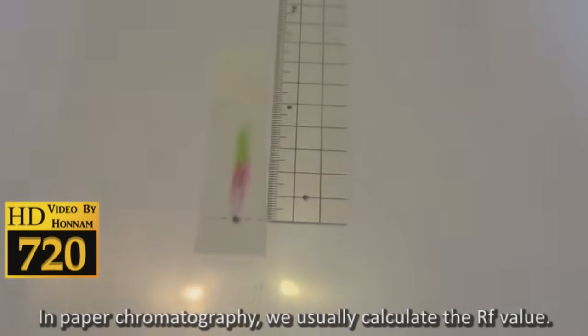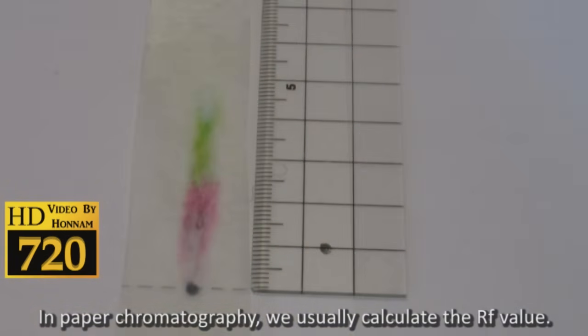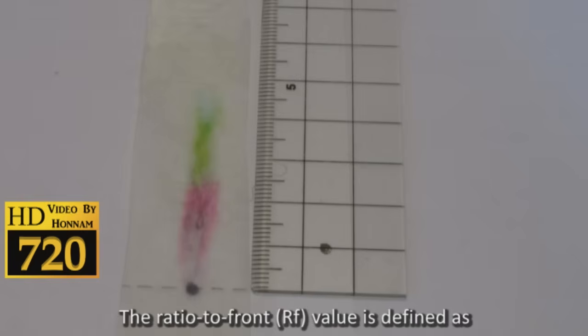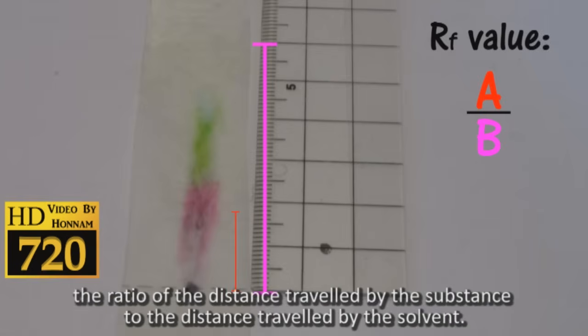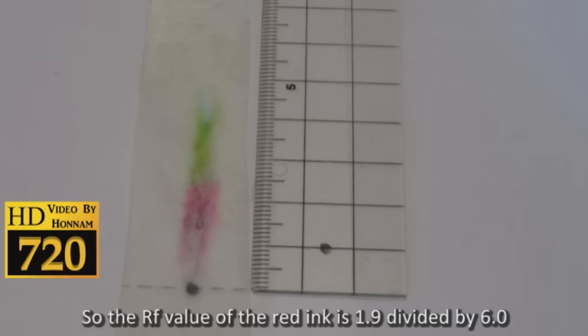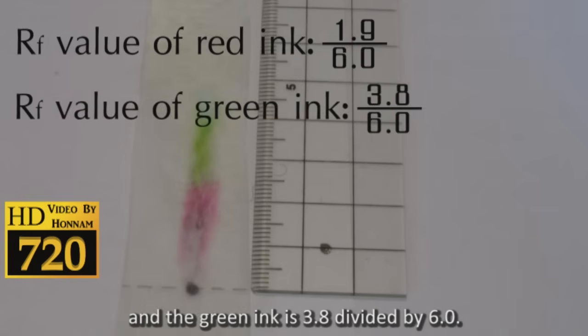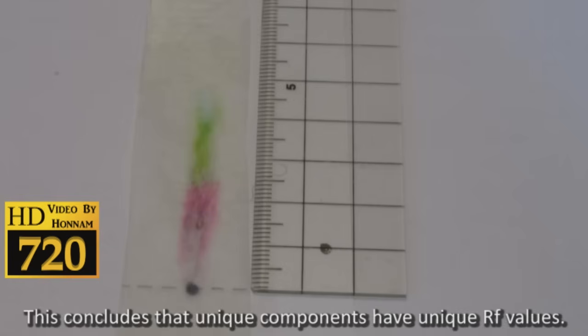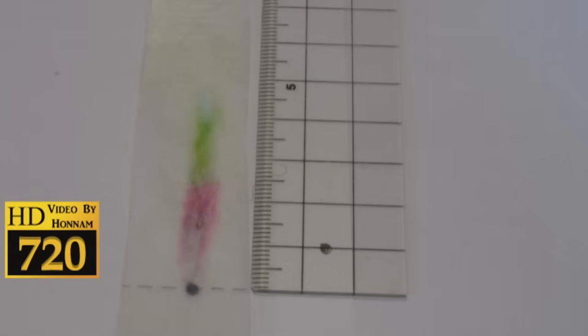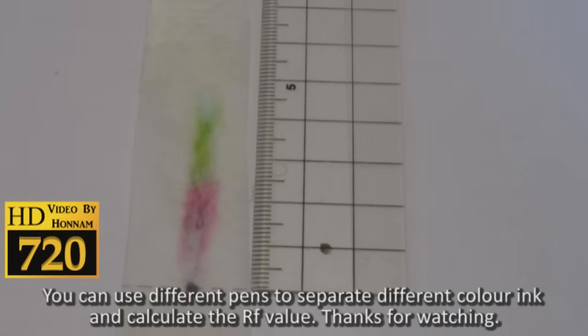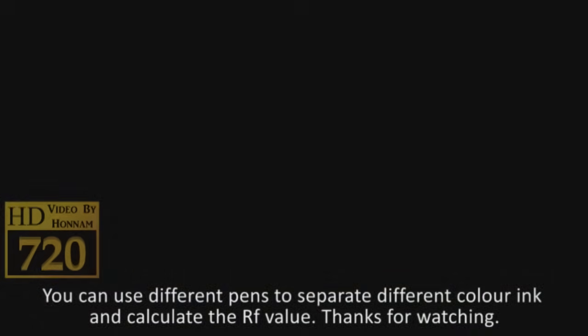In paper chromatography, we usually calculate the RF value. The ratio to front value is defined as the ratio of the distance traveled by the substance to the distance traveled by the solvent. So the RF value of the red ink is 1.9 divided by 6.0, and the green ink is 3.8 divided by 6.0. This concludes that unique components have unique RF values. You can use different pens to separate different coloring and calculate the RF value. Thanks for watching.